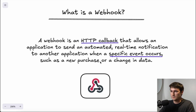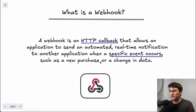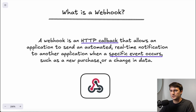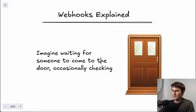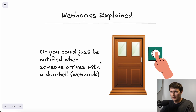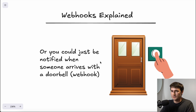Now let's talk briefly about webhooks, which are a bit different from APIs. A webhook is an HTTP callback that allows an application to send an automated real-time notification to another application when a specific event occurs, such as a new purchase or a change in data. A good analogy: imagine you're waiting for someone to come to the door and you're occasionally checking if someone's there. A webhook adds a doorbell — so you don't have to continually check; you just wait until you're notified when someone arrives and presses the doorbell.